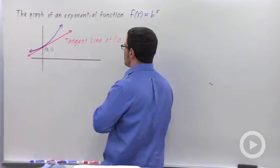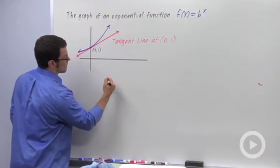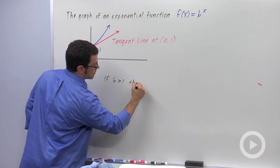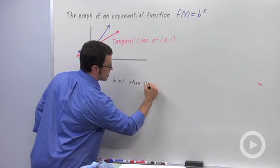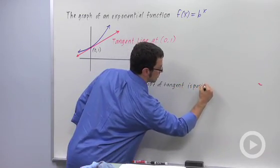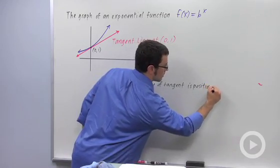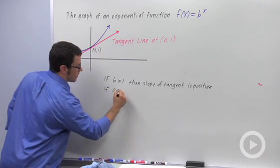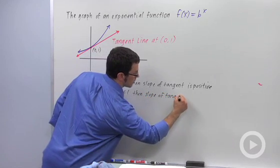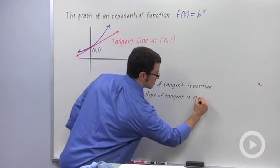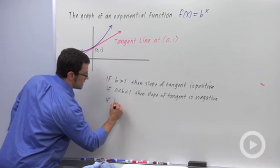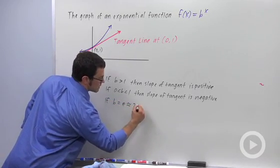So let's summarize what we discovered. If b is greater than 1, then the slope of the tangent line is positive. If b is between 0 and 1, then the slope of the tangent is negative. If you want the slope to be exactly 1, you need b to equal e. And e is approximately 2.71828.